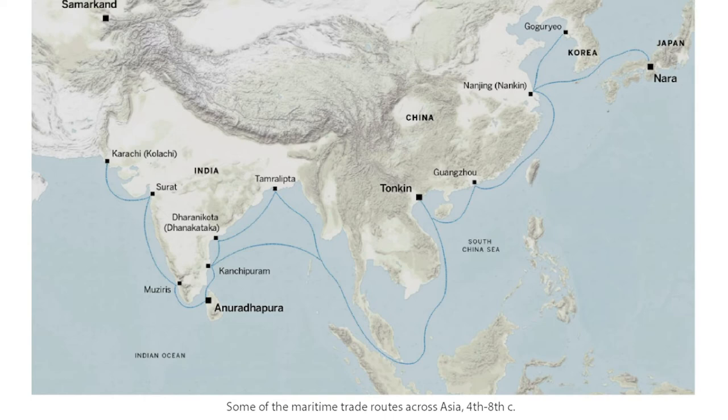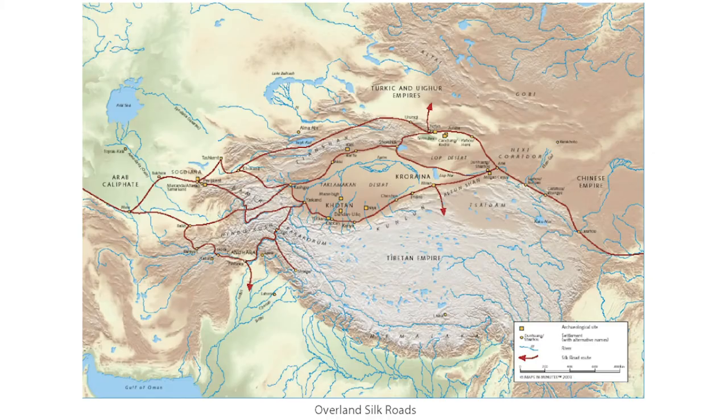So how would these Buddhist images and motifs even get to China? There were really two ways: overland and maritime routes. This map shows just some of the maritime routes across Asia from the fourth to the sixth century CE. You can see that from India, you could end up going up the east coast of China, up to Nanjing, not too far from Shanghai — and that is really not too far from where that funerary jar was found.